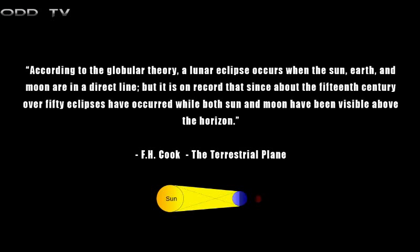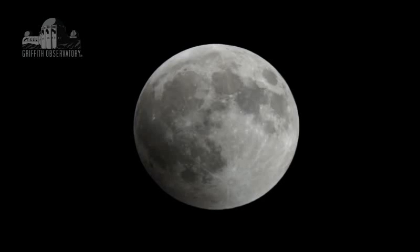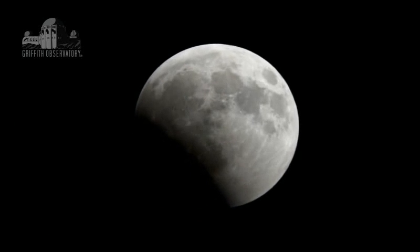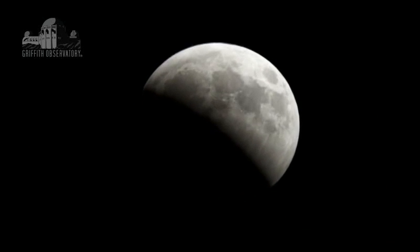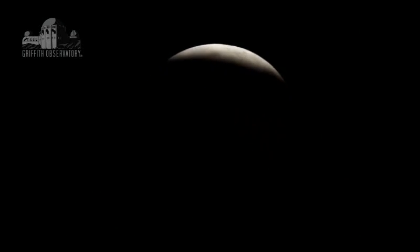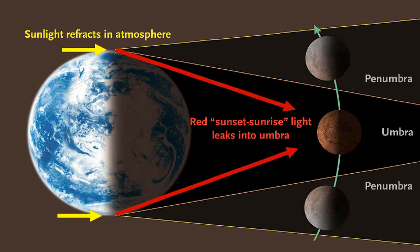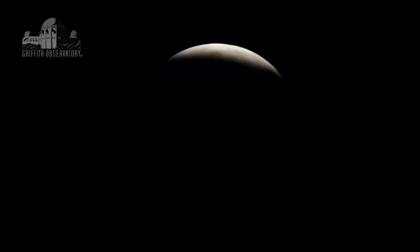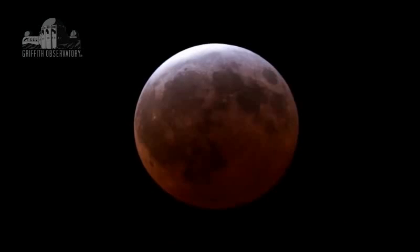According to the globular theory, a lunar eclipse occurs when the Sun, Earth, and Moon are in a direct line. But it is on record that since about the 15th century, over 50 eclipses have occurred while both the Sun and Moon are visible above the horizon, according to F.H. Cook's 'The Terrestrial Plane.' When a lunar eclipse occurs, the round shadow of the spherical Earth crosses the face of the Moon. On some occasions, both the Sun and the Moon can be seen at the same time in the sky during the eclipse — but this is due to atmospheric refraction. At low angles, the atmosphere can act like a lens, which bends the light of the Sun and Moon a little bit around the curve of the Earth. But this effect only lasts one to six minutes, and only if you are viewing from the right place, before the Sun or Moon sets behind the horizon. Flat Earthers have no scientific answer for what causes lunar eclipses in the first place, so using them as evidence for a flat Earth is odd, indeed.